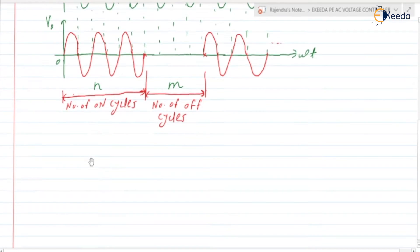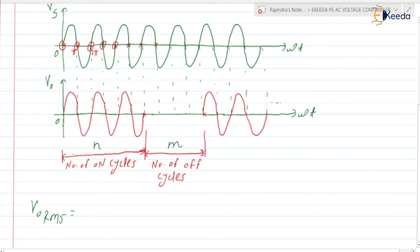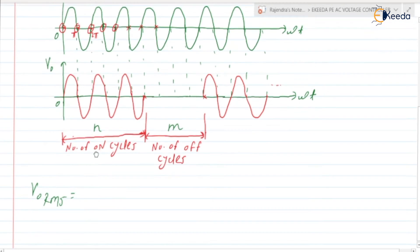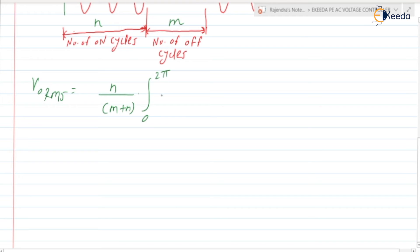Now we are going to derive the expression for V0 RMS, the RMS value of output voltage. Here we have whatever the waveform of V0 for first n plus m cycles, and the same is repeating for the next m plus n cycles. Out of the m plus n cycles, for the first n cycles it is non-zero. So we can write V0 RMS as equal to n upon m plus n, into the integration from 0 to 2 pi of Vm squared into sin squared of omega t into d(omega t), to the power 1 by 2.